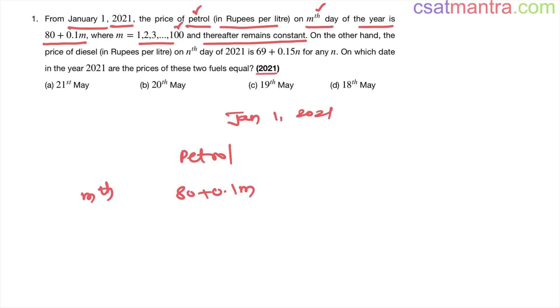It is on the mth day and m is from 1, 2, 3 up to 100. On the 100th day let's find out this petrol price: 80 + 0.1 into 100, so 80 + 10, that is equal to 90. So after 100 days the price is 90 and it remains constant.